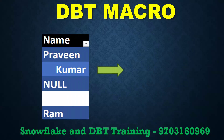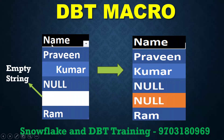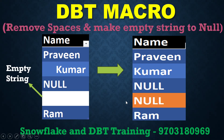If you see, this is my input and my expected output is like this. The requirement is: wherever spaces are there before or after, I want to remove the spaces — trim the spaces. And wherever there is an empty string, I want to make it null. This is the use case.